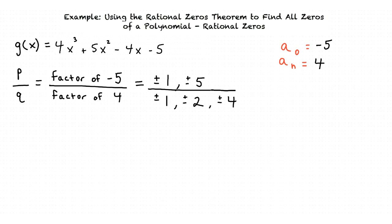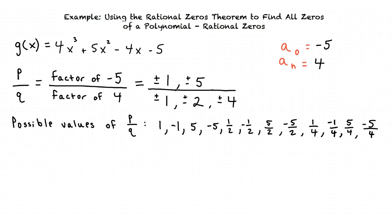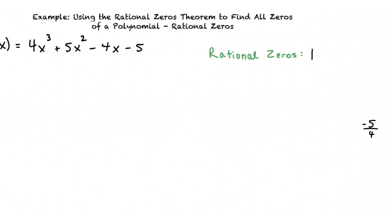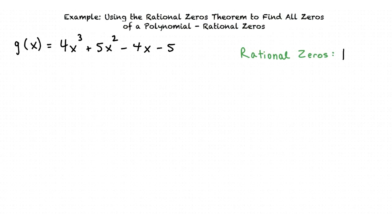This means that the following numbers are the possible values of p over q. Now we check these numbers until we find a zero of g of x. We find that 1 is a zero because g of 1 equals 0. Now we know that our first rational zero is 1.